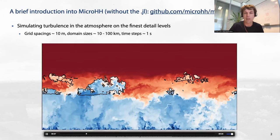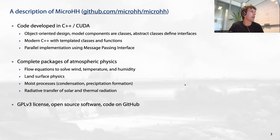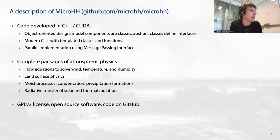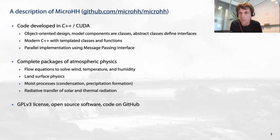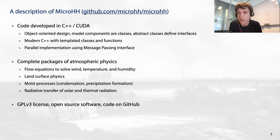MicroHH is our model. Our code is written in C++ and also CUDA so it can run on the GPU, written in object-oriented design with quite abstract C++. It basically contains a full package of atmospheric physics — not only solving the flow but also evolved physics: what happens at the land surface, how clouds form from water and cloud droplets, and radiative transfer. It's a very complete model. The part that went to Julia is only a very small subset — just the flow solver. Our codes are open source, so everything I show you today you can download from GitHub and try it out yourself.